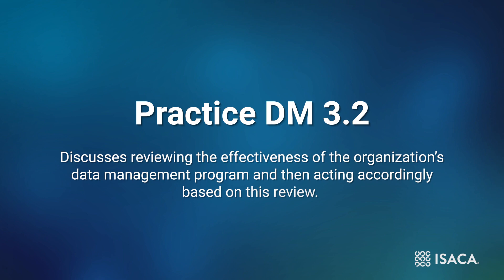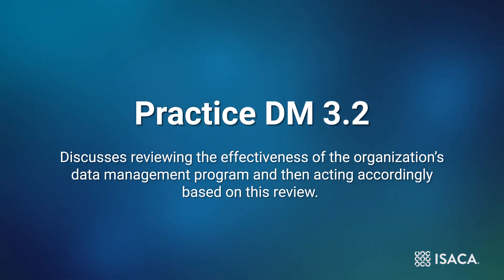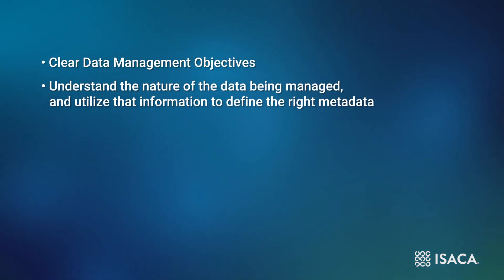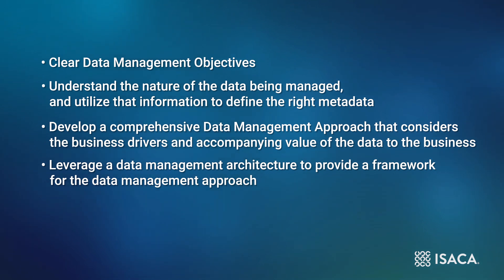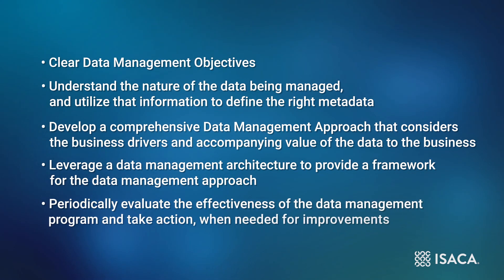Practice DM 3.2 deals with a topic that is a common theme at Level 3: learning lessons. The practice discusses reviewing the effectiveness of the organization's data management program and then acting accordingly based on this review. Effectiveness implies that we can measure what is going on with our data management activities, which in turn requires that our data management objectives are stated in SMART terms. So the overall key to this practice area can be summarized as: clear data management objectives; understand the nature of the data being managed and utilize that information to define the right metadata; develop a comprehensive data management approach that considers the business drivers and accompanying value of the data to the business; leverage a data management architecture to provide a framework for the data management approach; and periodically evaluate the effectiveness of the data management program and take action when needed for improvements.